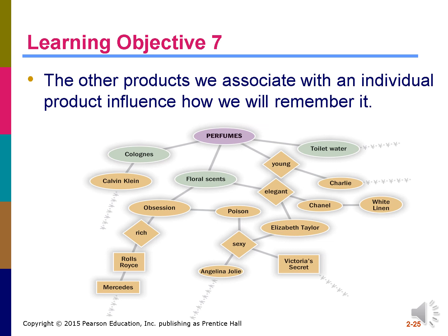Learning Objective 7 states the other products we associate with an individual product influence how we will remember it. Recent research suggests that long-term memory and short-term memory are interdependent systems. Dependent on the nature of processing tasks, different levels of processing occur that activate some aspects of memory rather than others. These approaches are called activation models of memory. The more effort it takes to process information, the more likely it is that the information will transfer into long-term memory. According to these activation models, an incoming piece of information gets stored in an associative network — like a complex spider web filled with pieces of data.